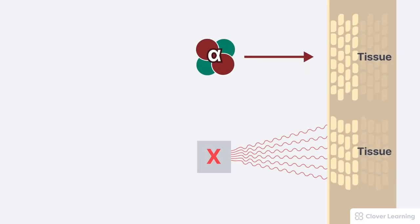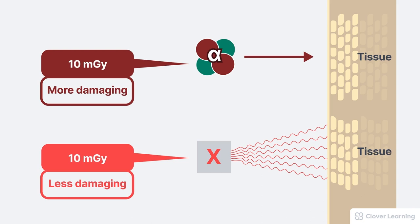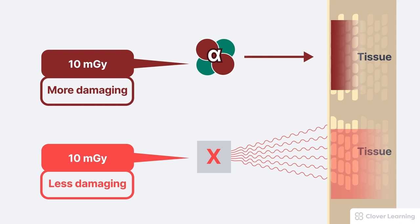The human body also responds differently to different radiation types. For example, a dose of 10 mGy of alpha radiation is significantly more damaging than 10 mGy of x-radiation. This is because alpha particles deposit all of their energy into one concentrated area, while x-ray photons usually distribute their energy through a larger, less concentrated area. The difference in biological harm caused by different radiation types is also described by the concepts of linear energy transfer (LET), relative biological effectiveness (RBE), and the radiation weighting factor (WT), all of which are discussed in detail in other lessons.